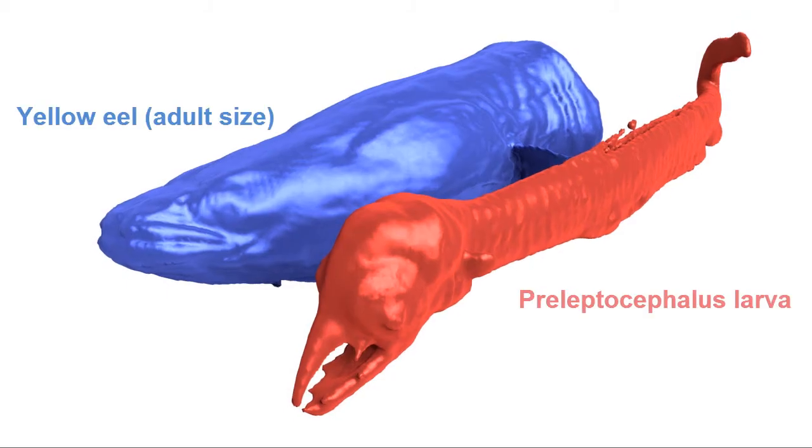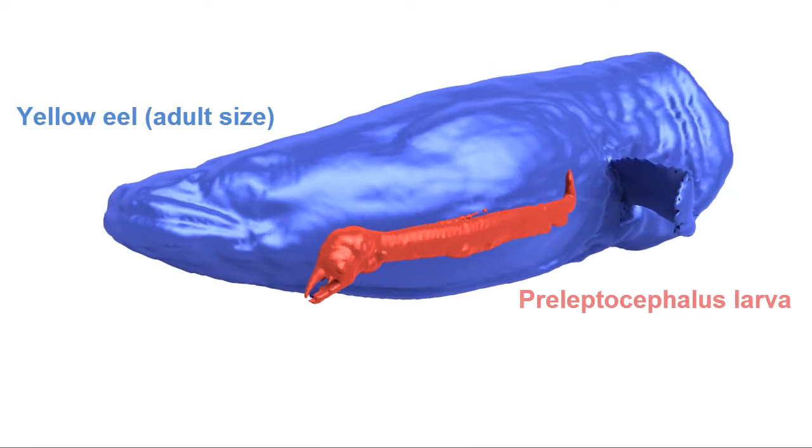Now, there is one problem. These leptocephalus larvae have a feeding apparatus of only one millimeter, which makes it virtually impossible to measure feeding performances, like for instance bite force, directly onto the larvae itself.